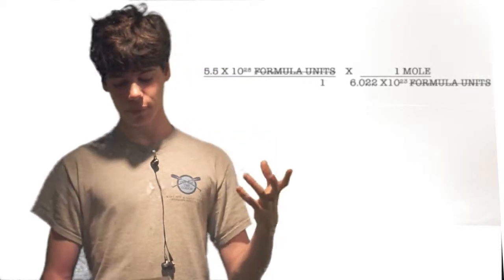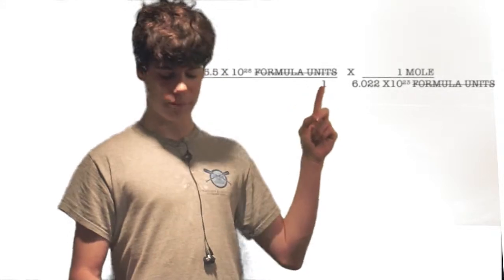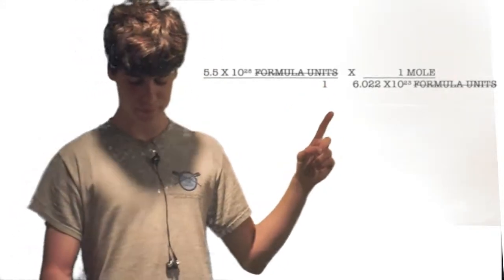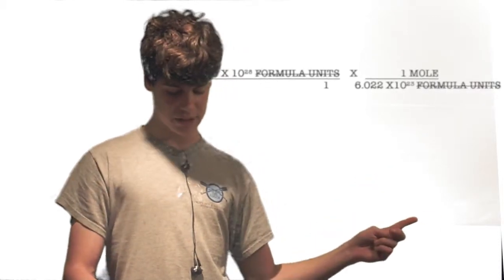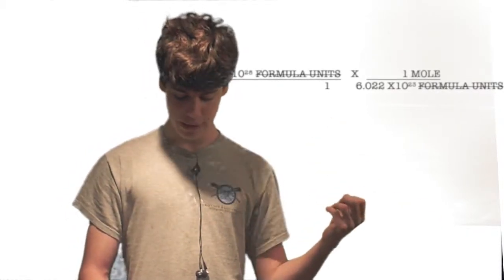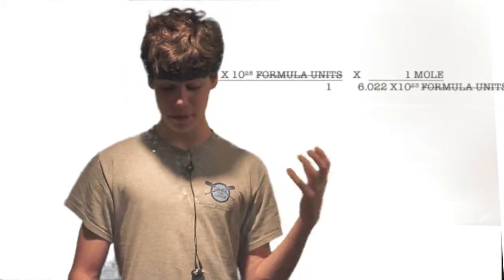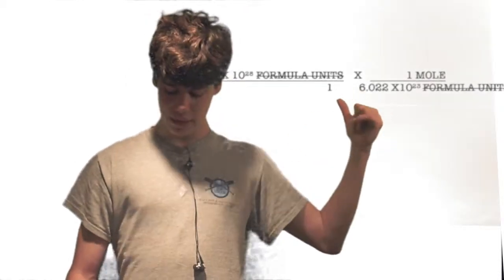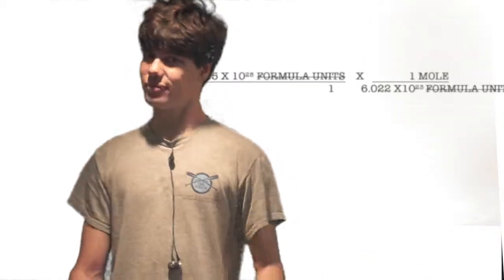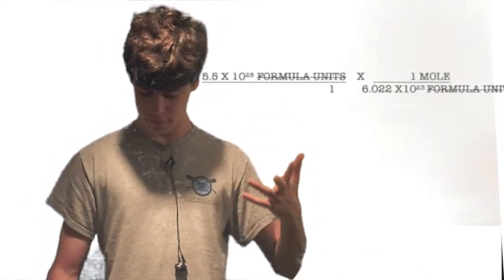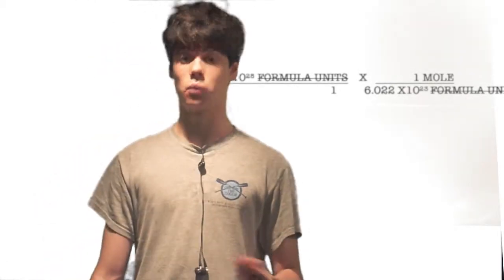Another example: 5.5 times 10 to the 28th formula units of potassium iodide. You multiply by 1 mole over Avogadro's number of formula units, and you get 9.13 times 10 to the 5th moles of potassium iodide. That's a big number, but remember we had 10 to the 28th on top and only 10 to the 23rd on the bottom.